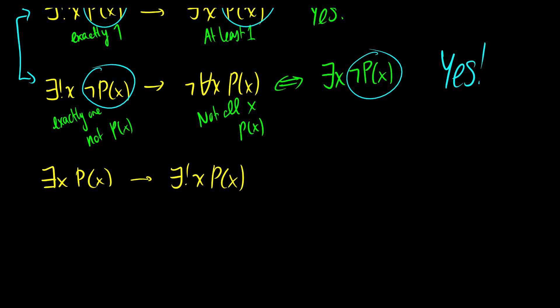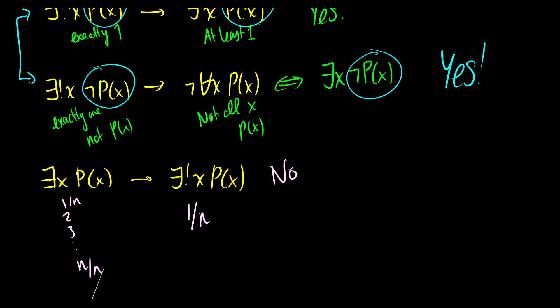What about the last one? There exists an x such that p(x) implies there exists a unique x such that p(x). Well, no — this one is going to be false; it's not always going to be true. Because there could be one, two, three, all the way up to n out of n. This says exactly one x, but exists x only requires at least one, so there are many other possibilities. Sometimes it'll be true — when exists x is exactly one case — but it's not always true.